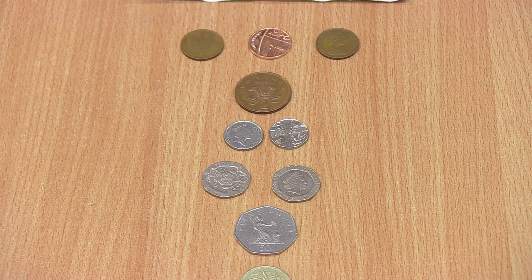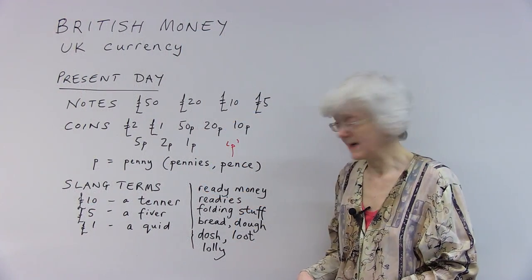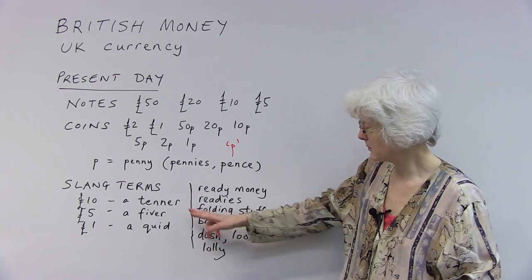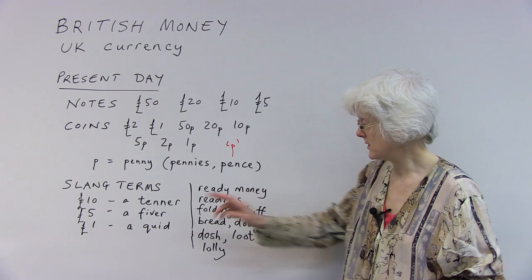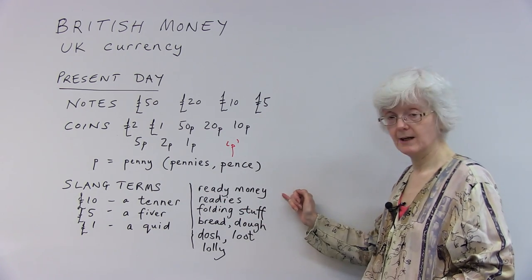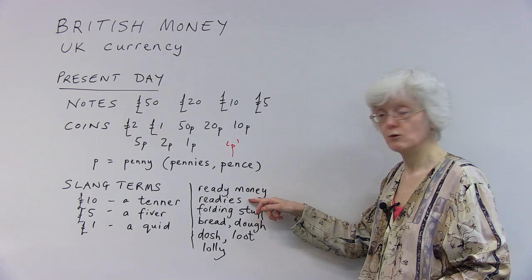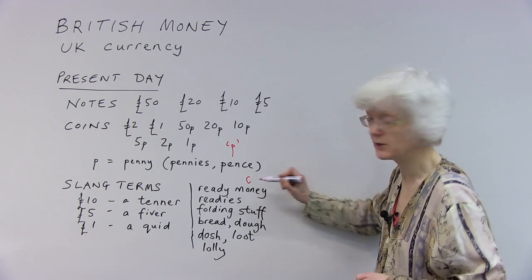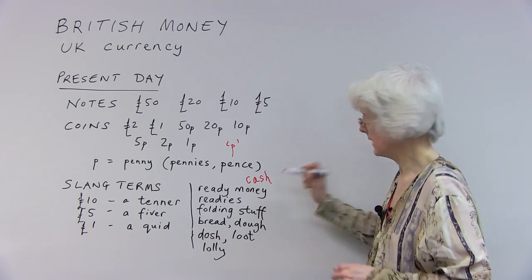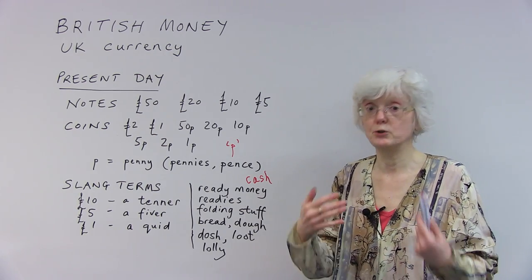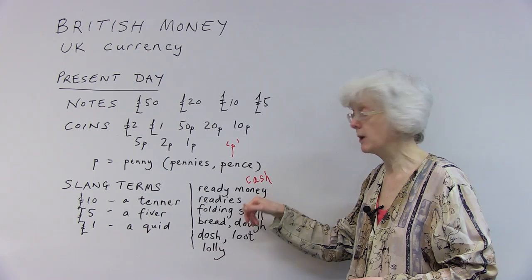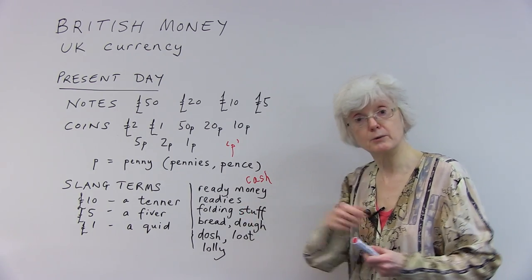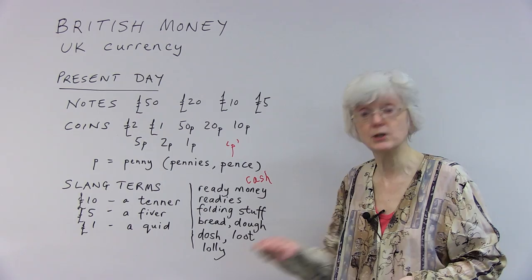So that's the current currency. And let's just go back now and have a look at a few more slang terms for money. So we've just looked at the slang terms for the notes: tenner, fiver, and quid. And it's not a slang term, but people say they would like to be paid in cash, or do you have the cash? So this is the ready money — the reddies — rather than paying by credit card or debit card or cheque.